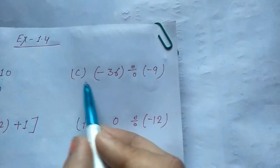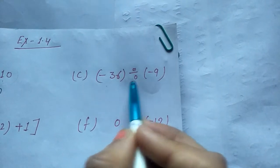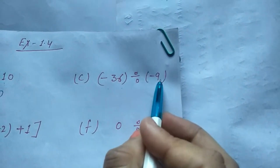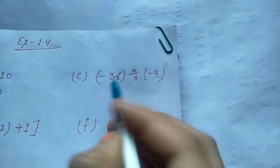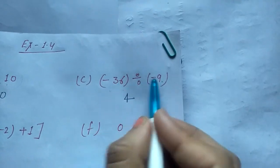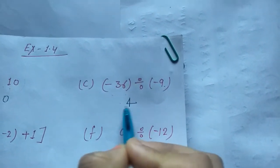Now part C: minus 36 divided by minus 9 — 9 times 4 is 36, and minus minus is plus, so the answer is plus 4.